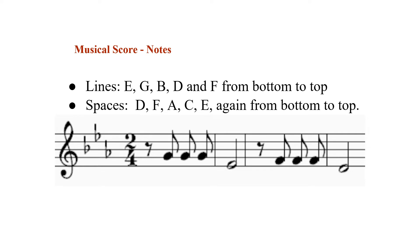Notes in a musical score can be located between lines or on the lines. If a note lies at the very bottom line, we call it note E. The second line from the bottom is note G, and so on. From the bottom up on the lines, we have notes E, G, B, D, and F. If a note lies on the first space from the bottom, that is note D. Then we have note F, A, C, and finally note E — again, from bottom to top.